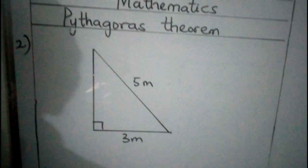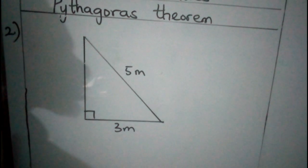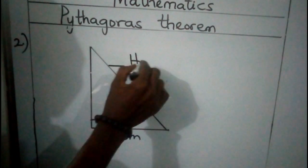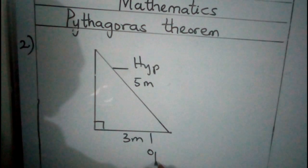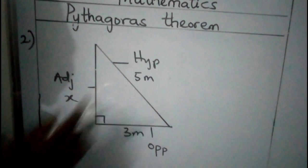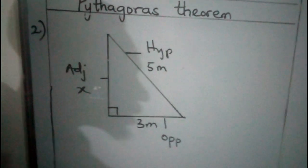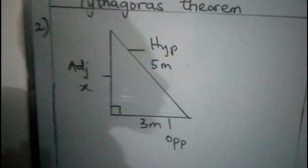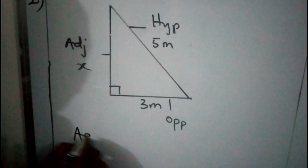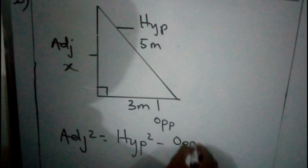Example 2. We have to find the missing side in this shape as well. This is another right-angled triangle — the right angle is there. We label the sides: the slant side is the hypotenuse, which is 5 metres. The opposite is 3 metres. The adjacent we do not know, so we label it X. Adjacent is one of the shorter sides, so from our formula: Adjacent squared equals Hypotenuse squared minus Opposite squared.